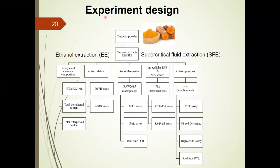In our experiment design, we extracted turmeric powder — around 800 grams — by ethanol extraction (EE) or supercritical fluid extraction (SFE), and then analyzed the chemical composition, anti-oxidant, anti-inflammation, anti-cell senescence, and anti-adipogenic effects.